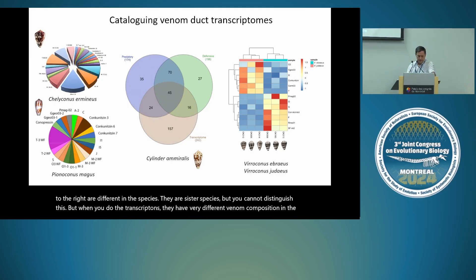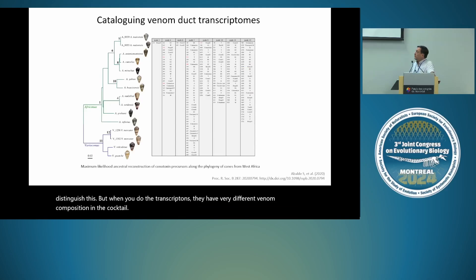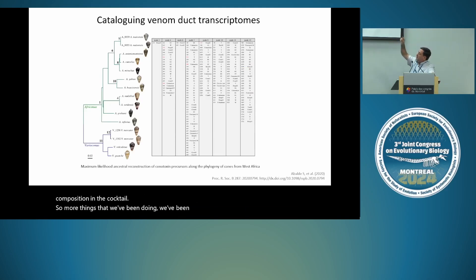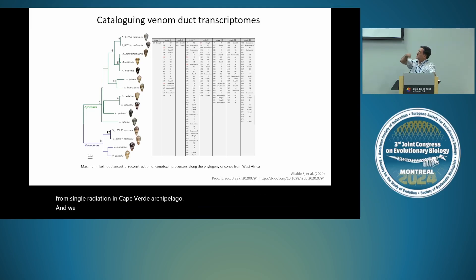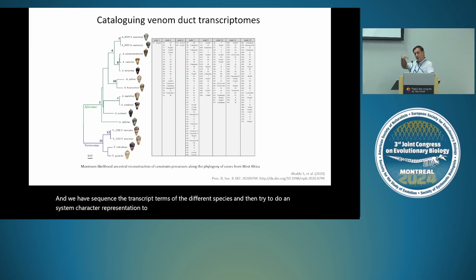More things we've been doing: these are different species from a single radiation in the Cape Verde archipelago, and we have sequenced the transcriptomes of the different species, then tried to do ancestral character reconstruction to see which conotoxin genes could have been present in the ancestor of the radiation.